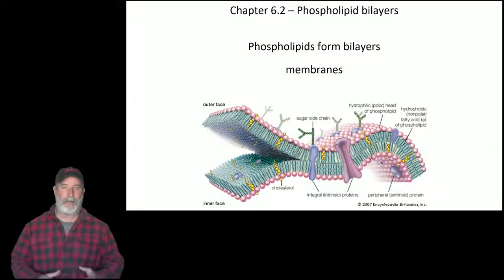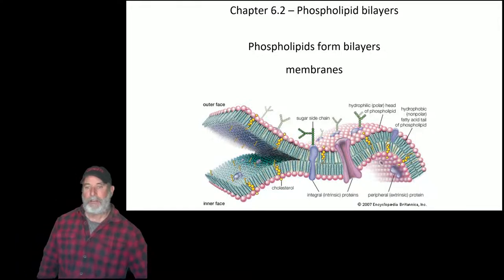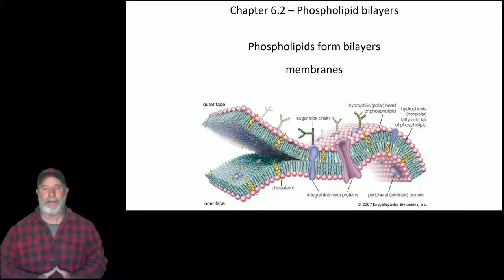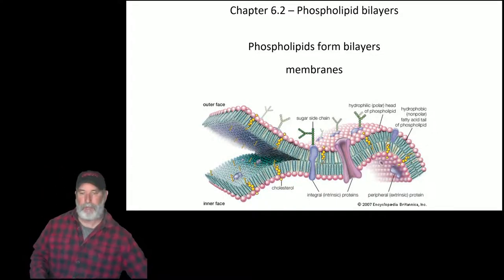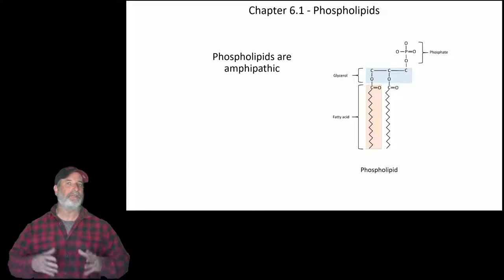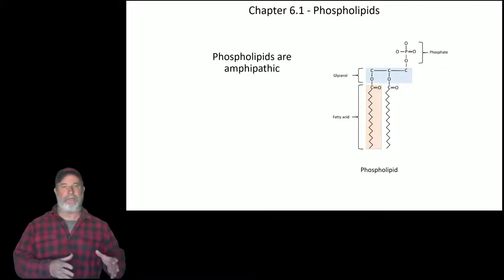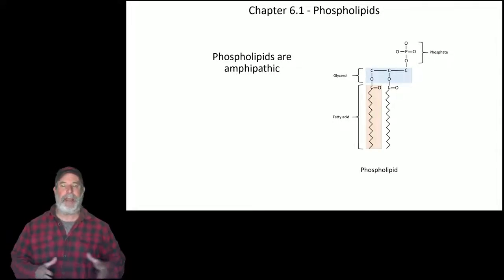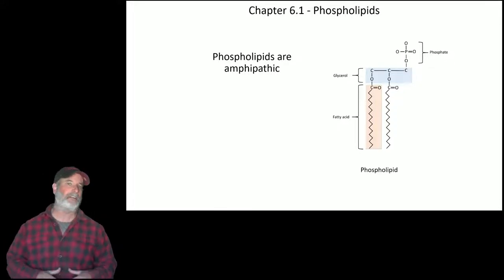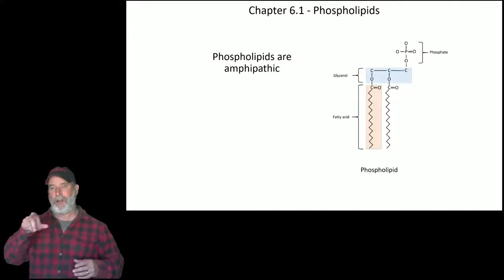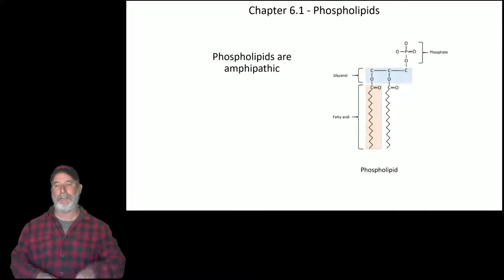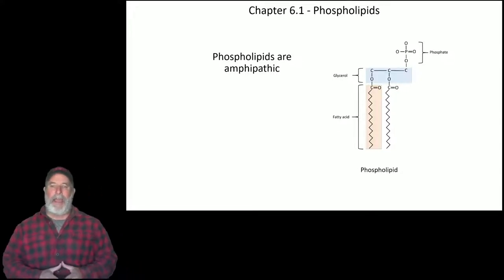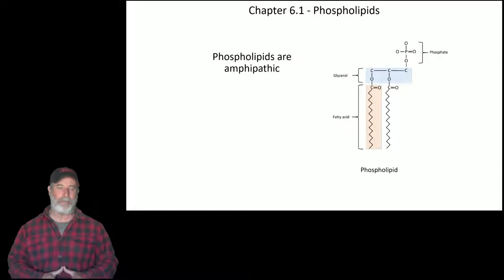We're going to talk about transport and diffusion as well. We know that you have these phospholipid membrane bilayers, and they're made up of a phospholipid. If you take a glycerol — those three carbons across the top — and add two fatty acid chains to them, mostly carbon and hydrogen, and then stick a phosphate on that third carbon, hence the name phospholipid.